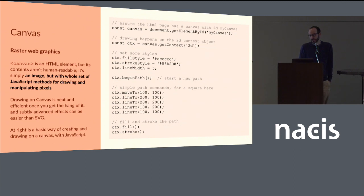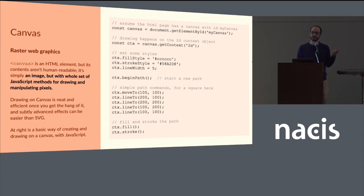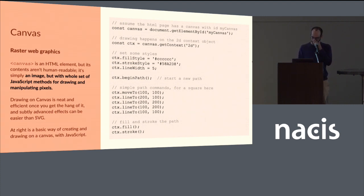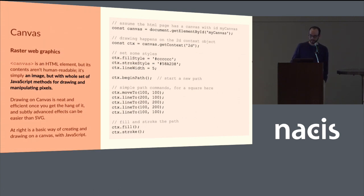With canvas, you can't really inspect it to see what's going on, because it's an image element — it's just pixels. But there's a whole set of JavaScript methods and settings for drawing on this canvas and manipulating those pixels, which can be very powerful because you can go bananas with customizing your image and messing with individual pixels. It's a little more opaque, but once you get the routines down, it'll become pretty easy and familiar. This code is just some drawing commands for making a square.